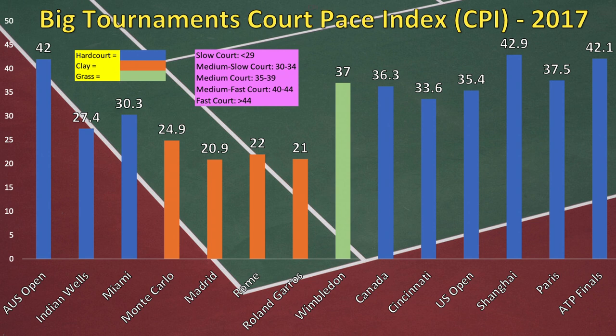The next three events — Monte Carlo, Madrid, and Rome — are our three big Masters 1000 clay tournaments. All pretty slow: 24.9 for Monte Carlo, 20.9 for Madrid, and 22 in Rome. The coolest thing here is that Madrid seems slow because of the CPI, but the elevation — almost 700 meters, or about half a mile up — means the air is thinner and courts tend to play quicker. The ball really flies through the air in Madrid, so it's not a typical clay court.